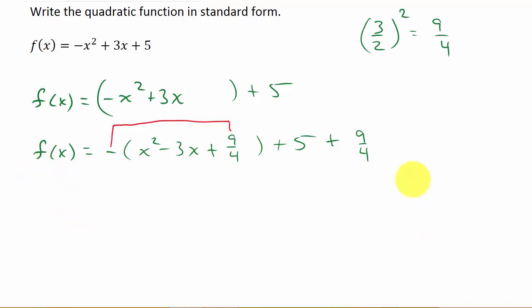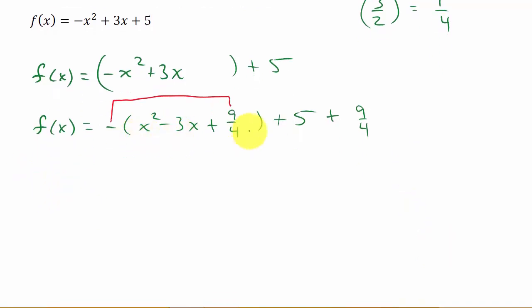So now, and I showed this in the other videos, this factors. This is in the form x² - 2xy + y². That's a perfect square trinomial. That's what happens when we complete the square. We make this in this form, a perfect square trinomial, and that factors into this.